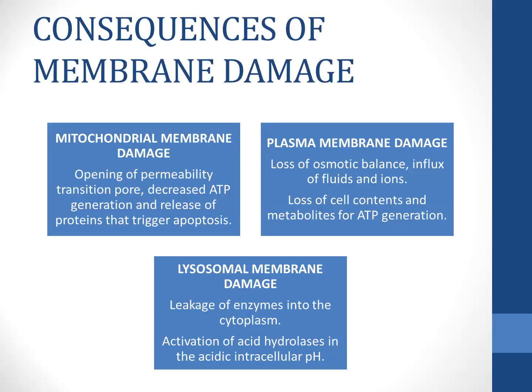There are three important membranes in the cell: the mitochondrial membrane, plasma membrane, and lysosomal membrane. When the mitochondrial membrane is damaged, it leads to opening of the permeability transition pore, so the contents of mitochondria leak out. When the plasma membrane is damaged, there is loss of osmotic balance, influx of fluids and ions, and loss of cell contents. When the lysosomal membrane is damaged, there is leakage of hydrolytic enzymes.